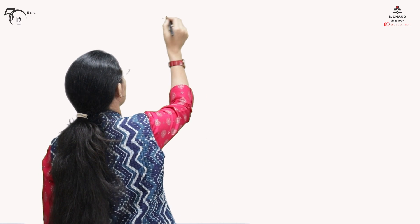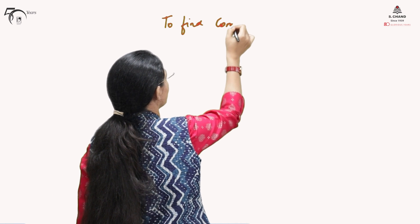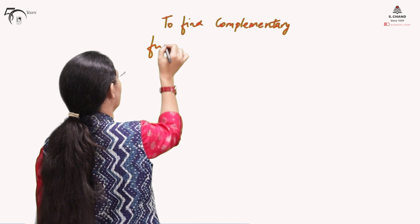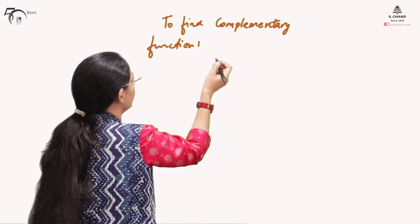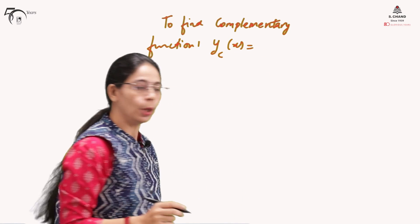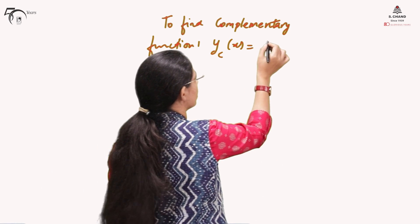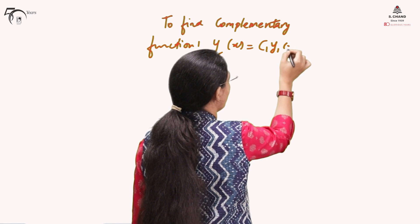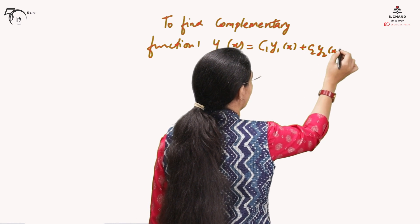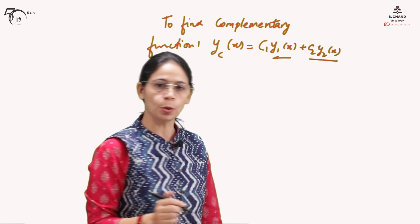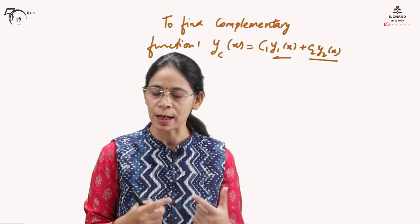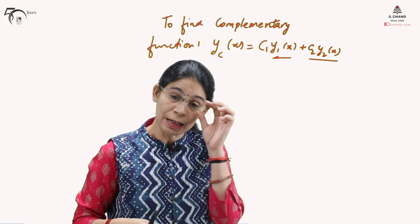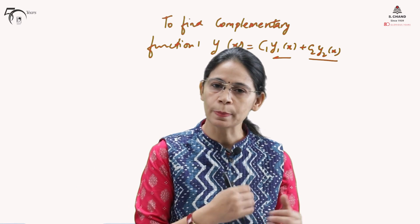To find the complementary function, it will consist of two arbitrary constants C1 and C2. The complementary function takes the form C1·y1(x) + C2·y2(x), where y1 and y2 are the two solutions whose linear superposition gives us the complementary function. Our aim is to find out y1 and y2.